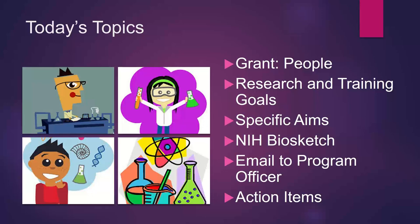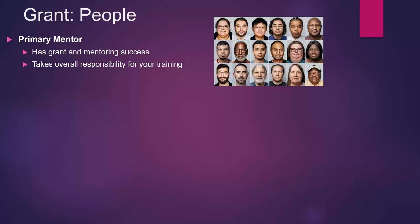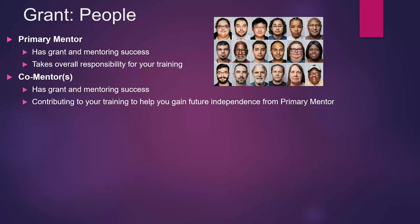So who are the people on your grant? Your primary mentor has grant and mentoring success and takes overall responsibility for your training. You can have several co-mentors who also have grant and mentoring success — one or the other might work out just fine. These people are contributing to your training to help you gain future independence from your primary mentor.